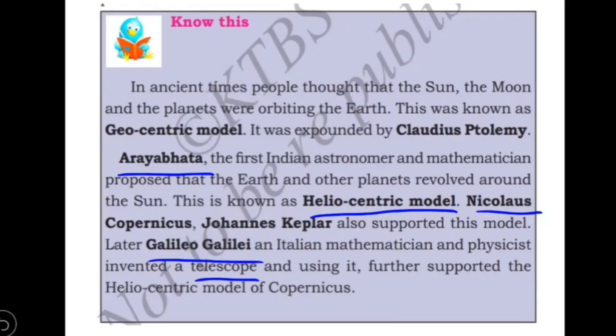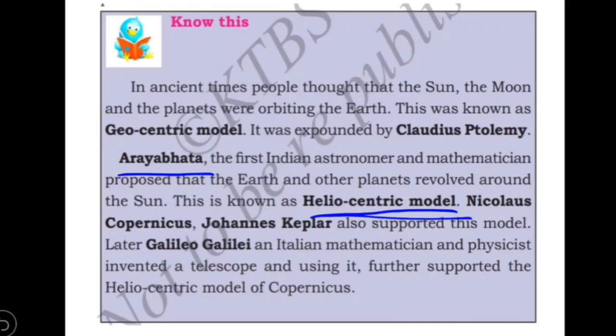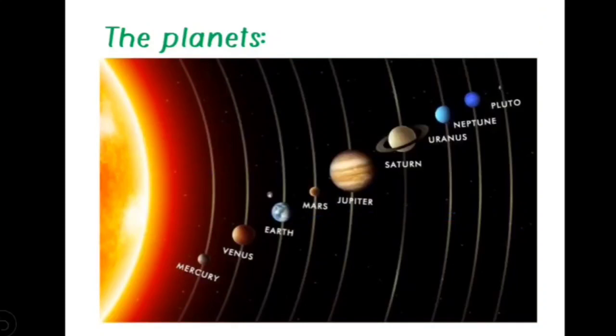The telescope was invented by the scientist Galileo Galilei. In the heliocentric model, the Earth and other planets revolve around the sun, and the sun is the stationary one.